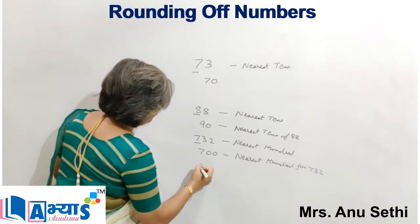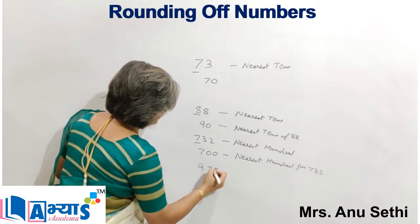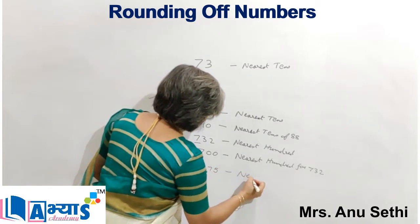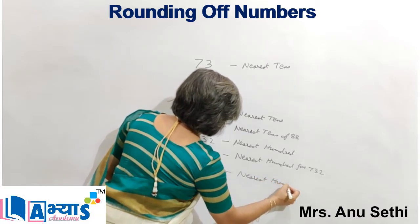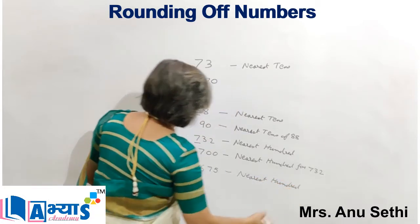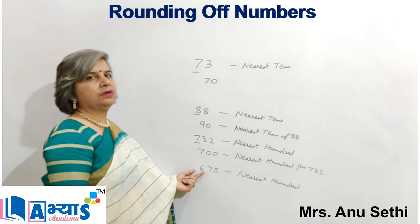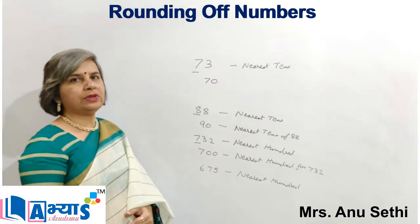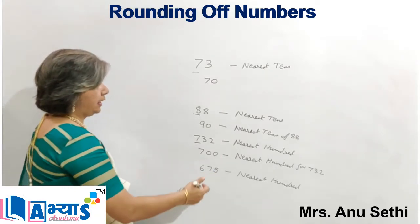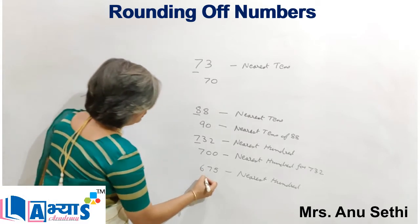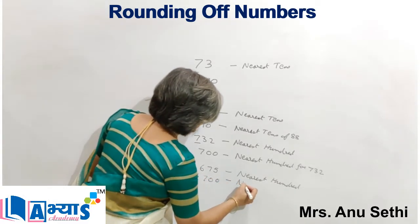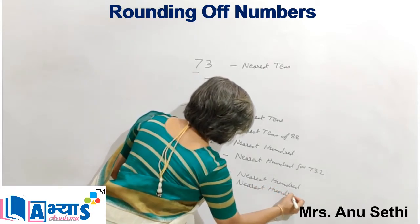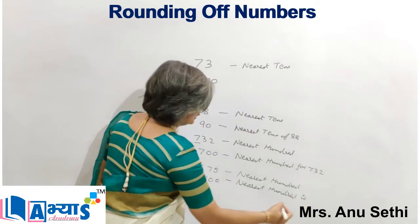Let us take another example. Suppose I have 675 and I am rounding it to the nearest hundred. I will take the 6 as it is because it is at the hundreds position. Now I will check this 7 — as 7 is more than 5, I will add 1 to 6 and the number will become 700. So 700 is the nearest hundred to 675.